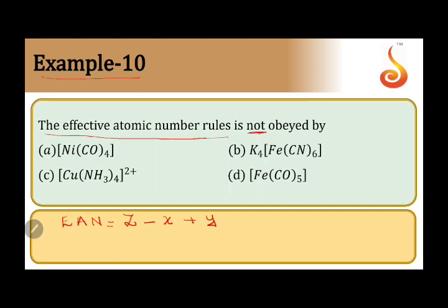In the first compound, in option A, nickel has atomic number 28. It is in zero oxidation state. It is gaining 4 electron pairs, 4 electron pairs meaning 4 into 2, 8 electrons. So, the answer here comes to be 36.